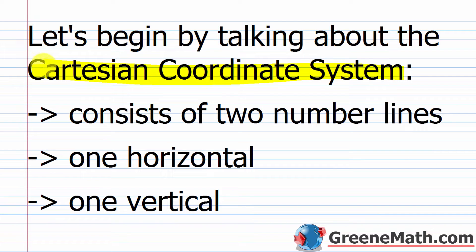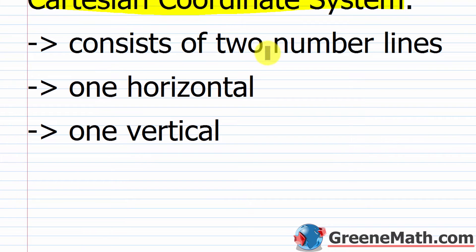The Cartesian coordinate system might be a source of confusion because it has many names. Your textbook might call it the Cartesian coordinate system, then start calling it the rectangular coordinate system, and sometimes just the coordinate plane — they're all the same thing. It's named after its inventor. Most of the time I'm just going to call it the coordinate plane. What you need to know is that it consists of two number lines: one horizontal and one vertical.